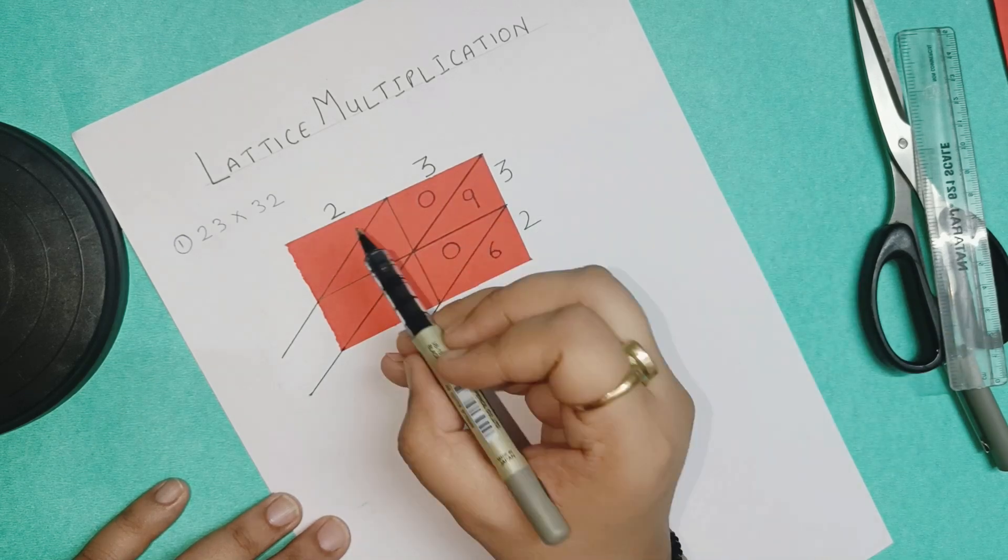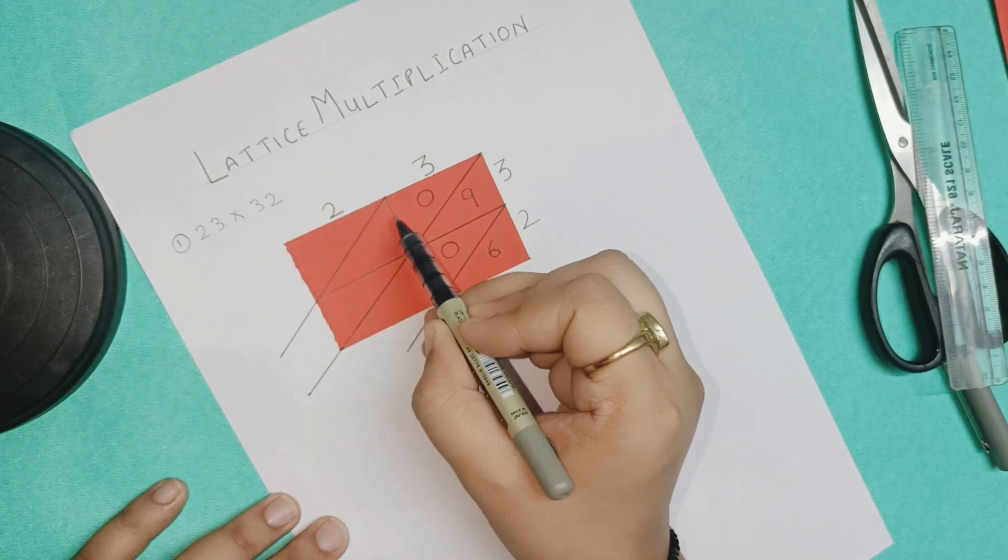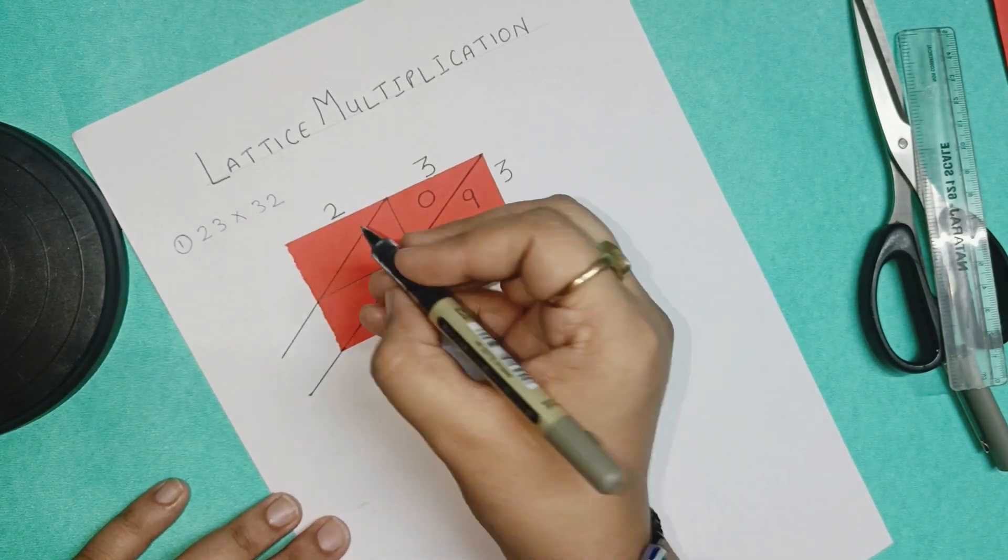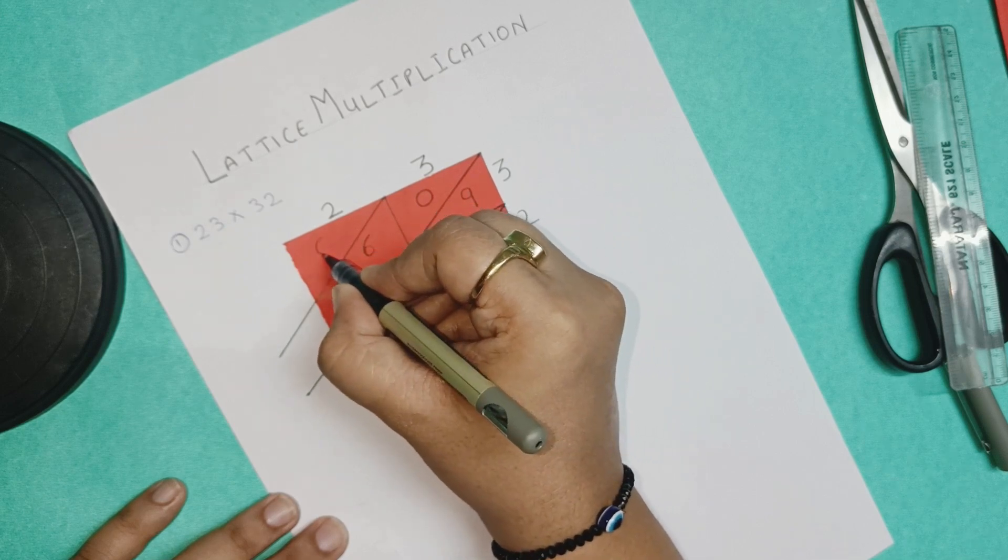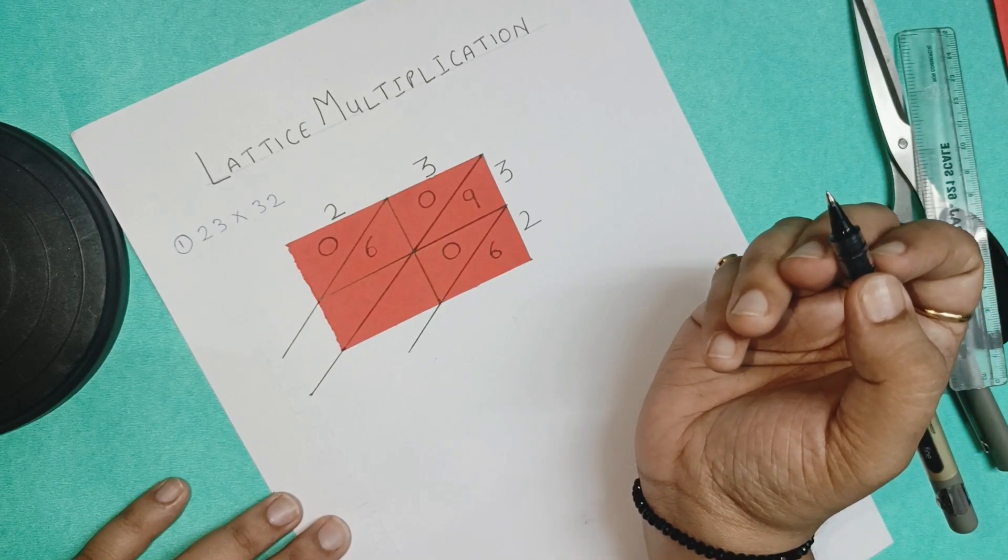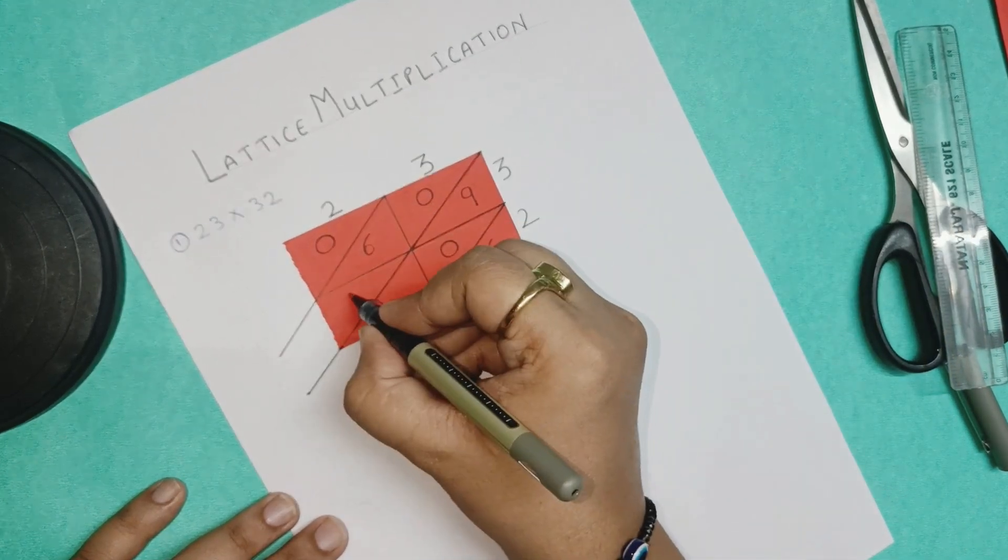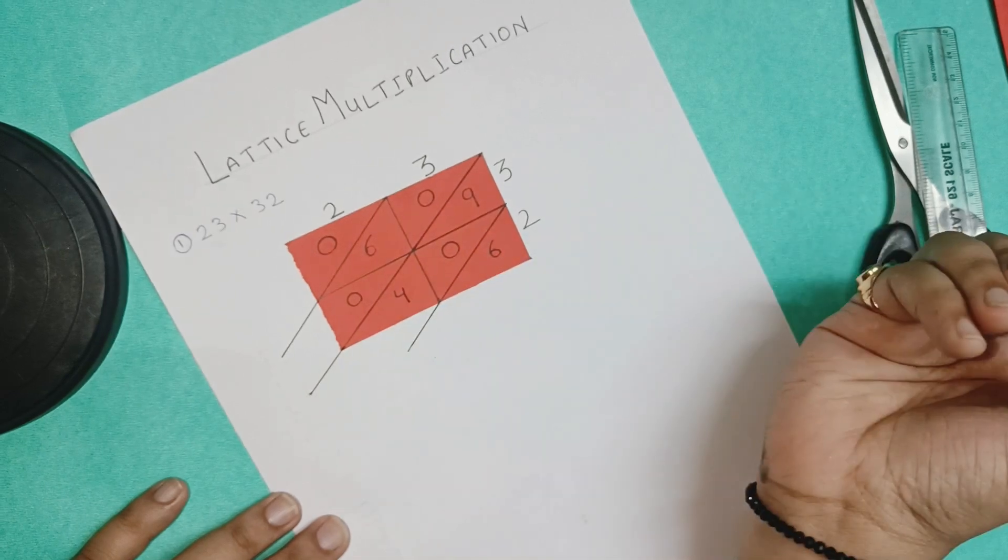Now we have to multiply 2 into 3. In this first box we will write, okay, 2 into 3. This again 6. So we have to write 0 6. And next 2 into 2 is 0 4.